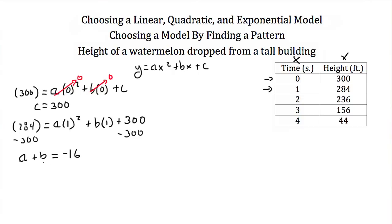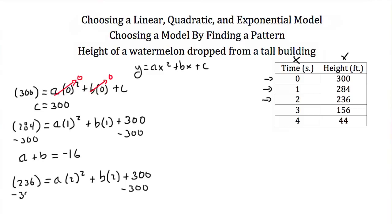I need one more point, so I'll plug in (2, 236). That gives us 236 = a(2²) + b(2) + 300. Moving 300 over, and noting that 2 squared is 4, we get 4a + 2b = 236 - 300, which equals -64.